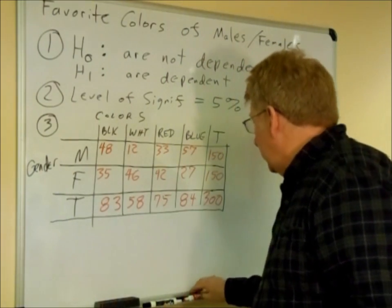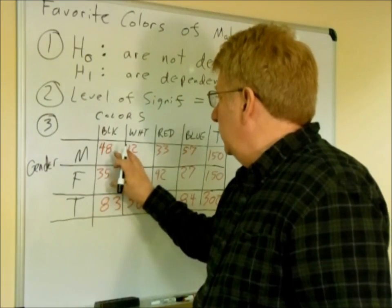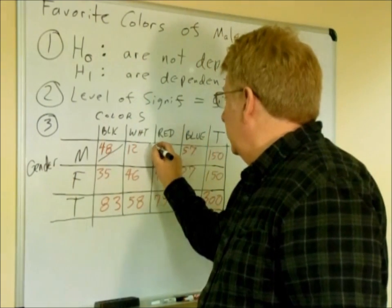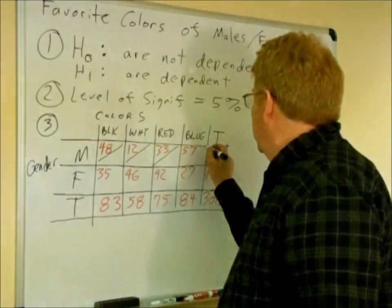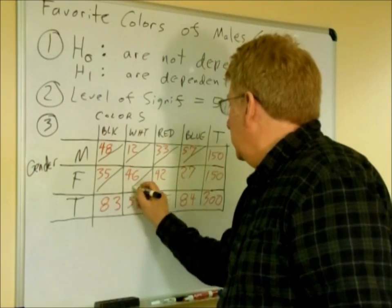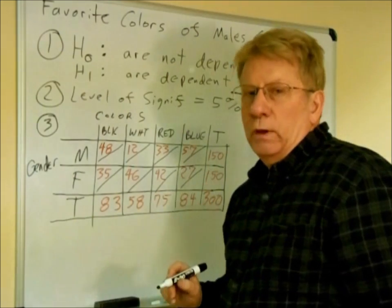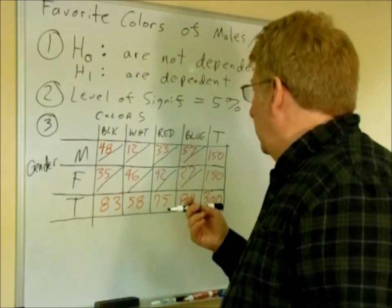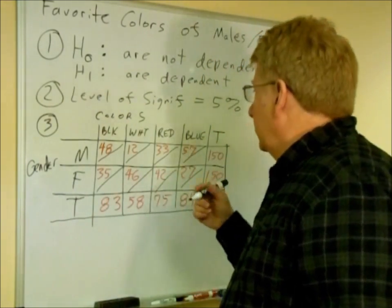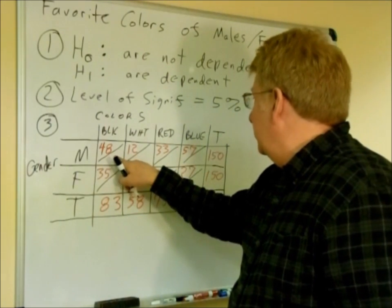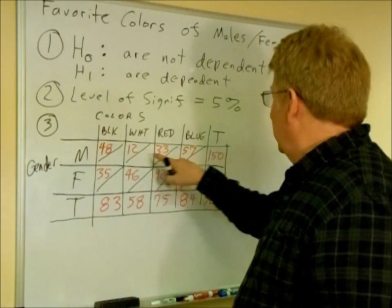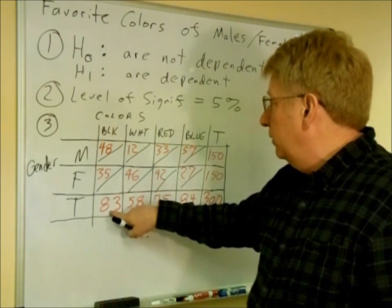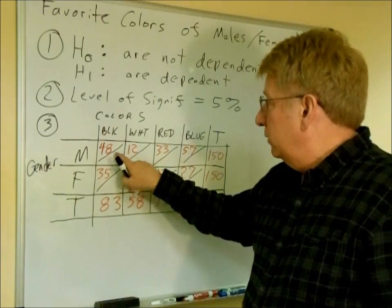One other thing that I might add, these are the contingency or the data that was collected. And another value you can calculate is what's called the expected value for each category. The expected value is calculated on the calculator and is put in a B matrix. If we want the expected value of this 48, we can take the, we go across to the total of 150 over 300, we multiply that by 83 over 300, and then times 100 and we get this value.